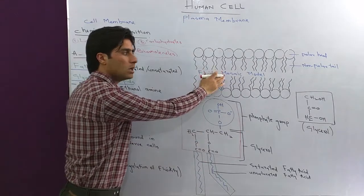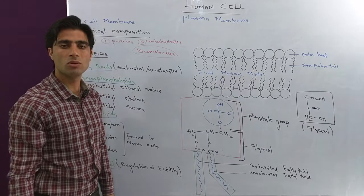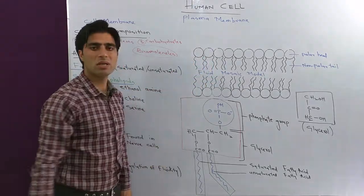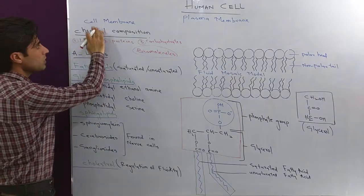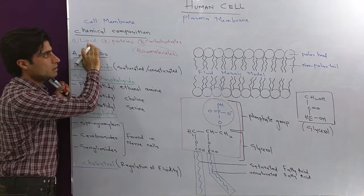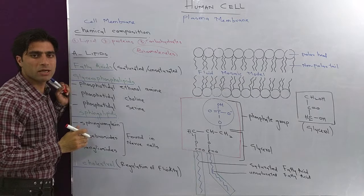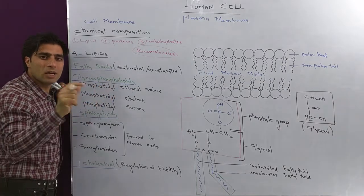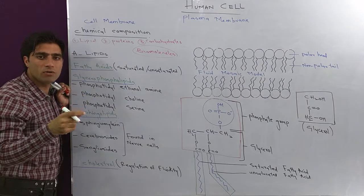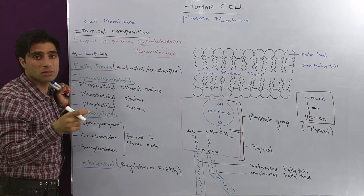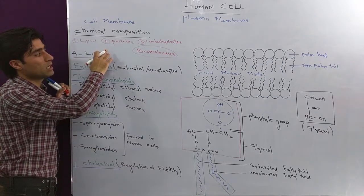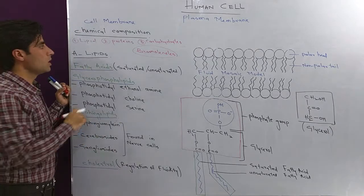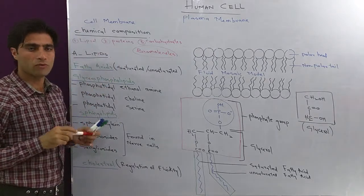In this structure I have only shown lipid molecules, not proteins or carbohydrates, because the plasma membrane is mostly made up of lipids. The chemical composition is: lipids most abundantly, then proteins, then carbohydrates. These biomolecules are found in the cell membrane in isolated or pure form and in conjugated forms such as glycoproteins and glycolipids.